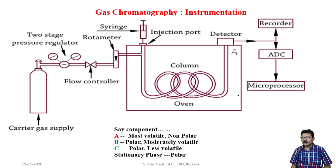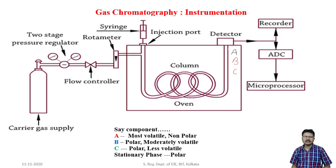So B will reach the outlet of the column after A, and C will reach after B. From this example we can say A will reach first, then B, then C at the outlet of the column. The detector will detect this signal, which ultimately will be indicated as the chromatogram, from which we can easily identify which one is A, which one is B, and which one is C as per the retention time and peak details.